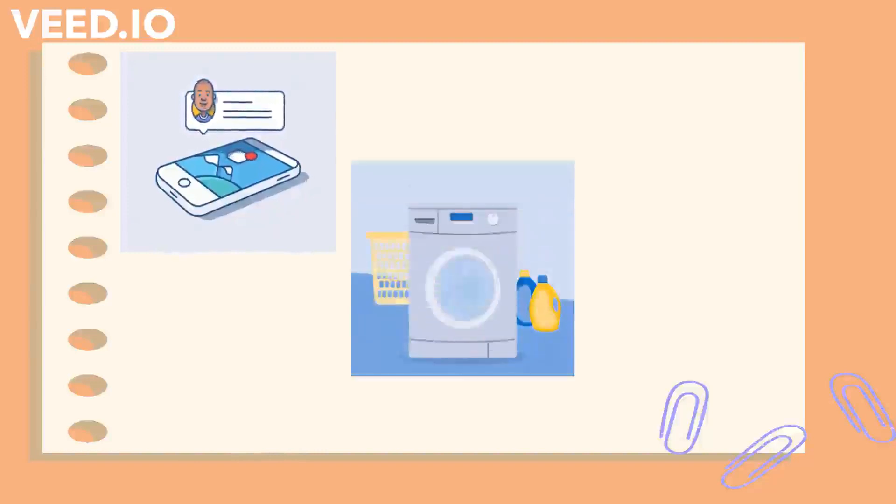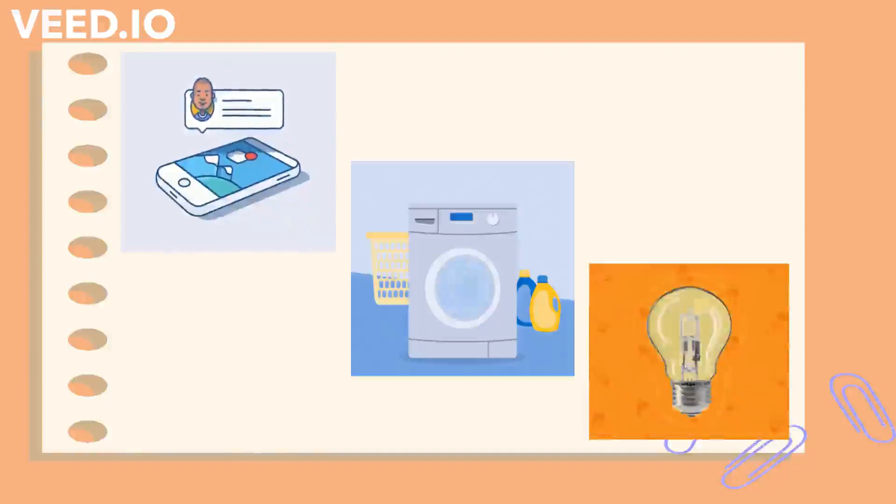We also operate household appliances just like this one. In the evening, we use light bulbs to see clearly. In fact, we can see the use of electricity in various devices, equipment and machines.